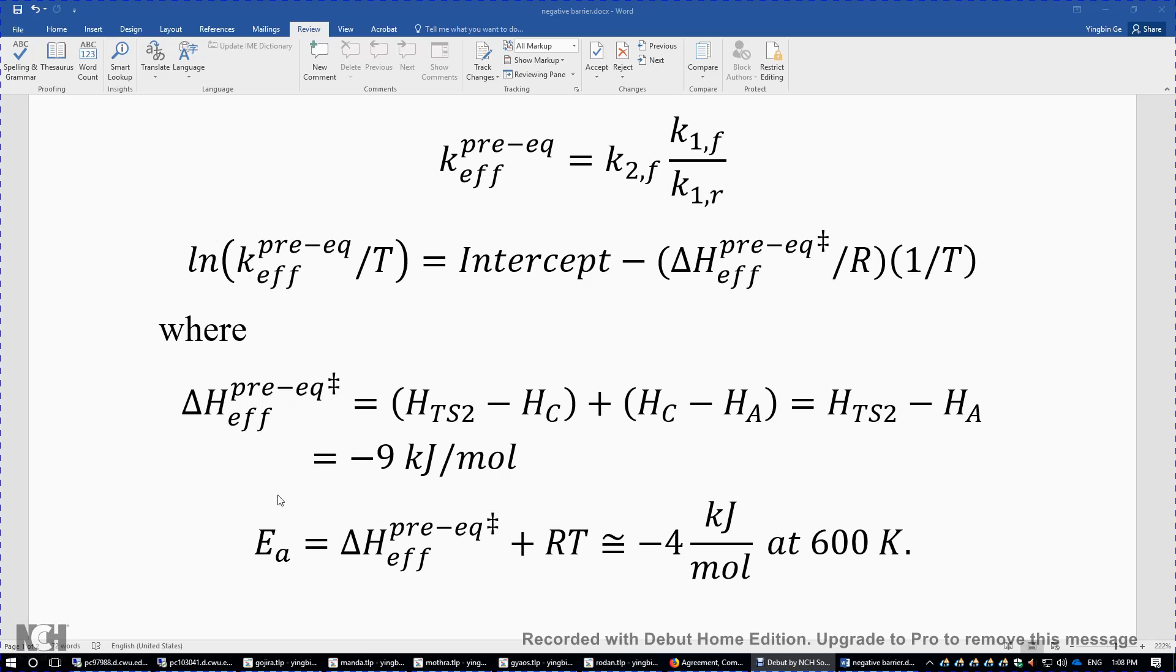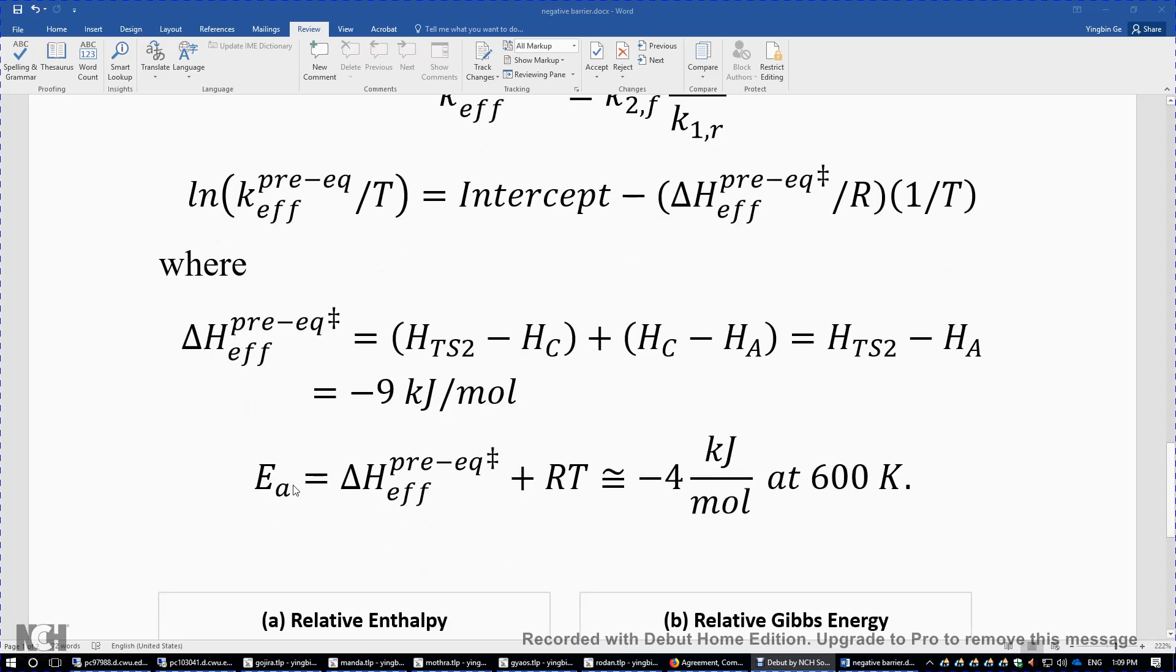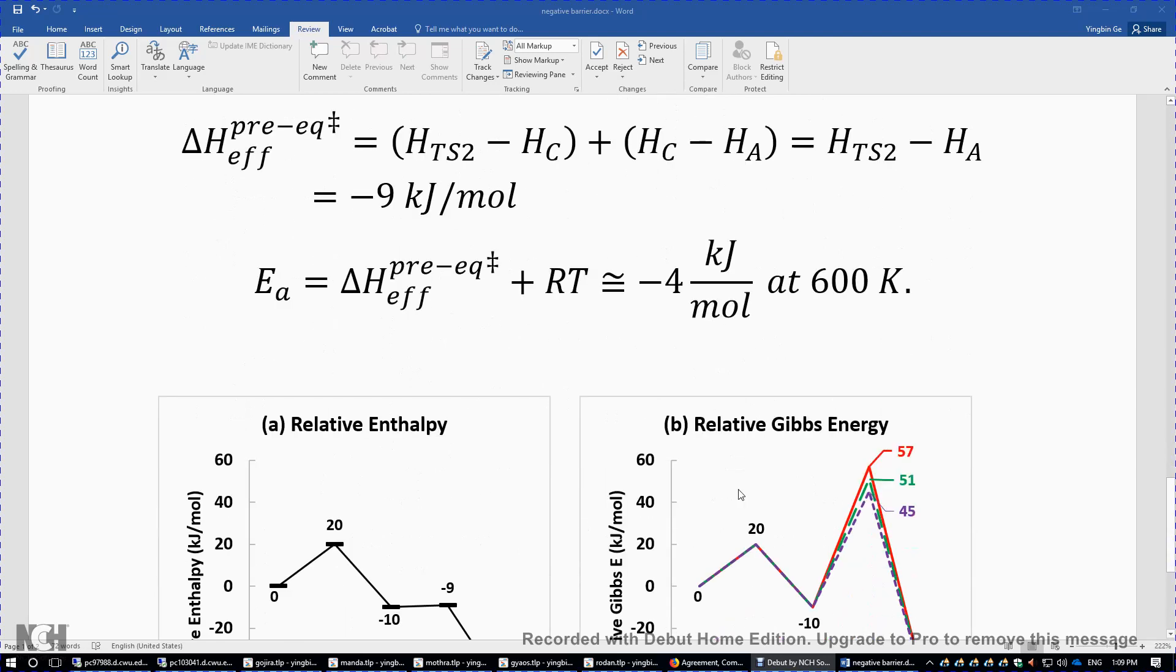In another video, I proved that the activation energy barrier equals the enthalpy of activation plus RT. Given a moderate temperature range, we plug in -9 here. I used 600K, and R is 8.3 joules per mole K. If you sum it up, you get -9 plus 5, resulting in -4 kilojoules per mole at 600K. The negative activation energy is obtained this way.